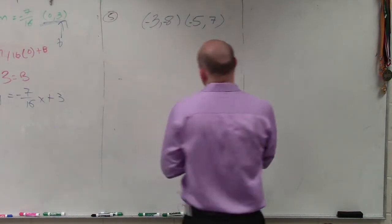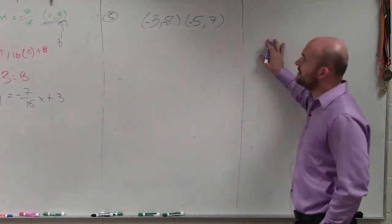So in this example, ladies and gentlemen, what I have is two points: negative 3 comma negative 8, and negative 5 comma 7.